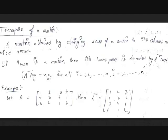Given a matrix A, transpose is a matrix obtained by changing rows to columns and columns to rows of that given matrix. In other words, it means we have rotated the matrix 90 degrees — its columns become rows and rows become columns. If the order of the matrix is M by N, then the order of the transpose will be N by M. In term basis, the element in the i-th row and j-th column of A-transpose is the element in the j-th row and i-th column of the original matrix A.